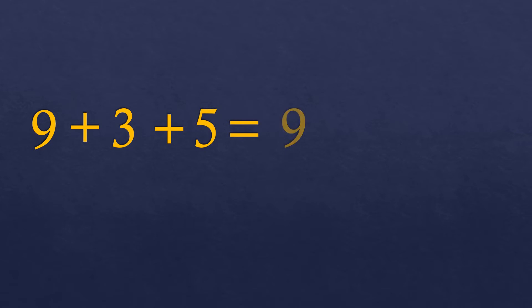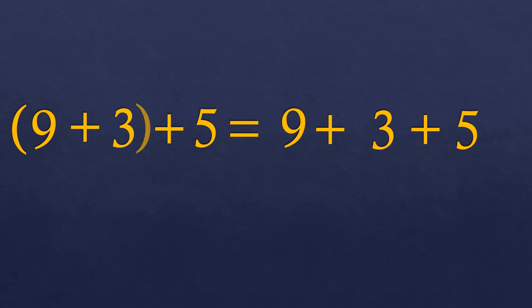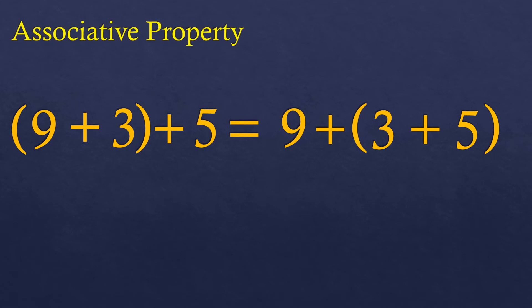So let's say we have 9 plus 3 plus 5. If we add 9 and 3 first on the left side, but on the right side we add 3 and 5 first, will it be the same answer? The answer is yes, according to the associative property of addition. The idea is it's okay to regroup the numbers as long as it's within the operation addition. Adding 9 plus 3 gives 12, and 12 plus 5 is 17. On the right, 3 plus 5 is 8, and 8 plus 9 is 17 — the same answer.